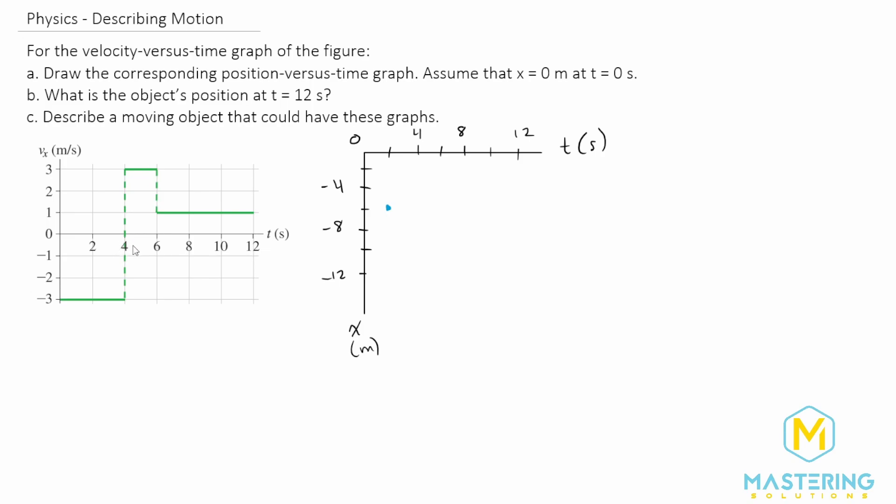Then at four seconds, it's the same thing, we have another negative six. So at four, it'll be all the way down to negative 12. And then at four seconds to six seconds, we're going now a positive three meters per second. And it's also two. So it's a positive six now.